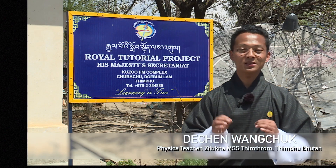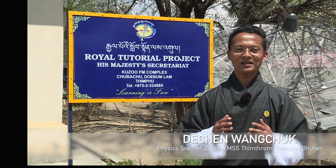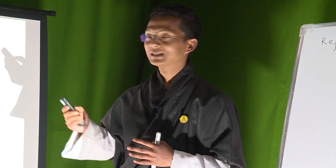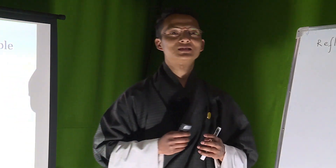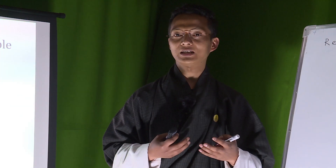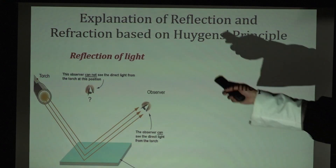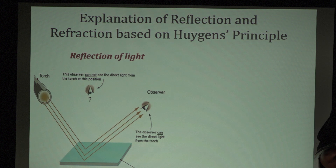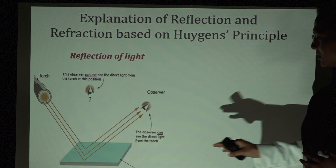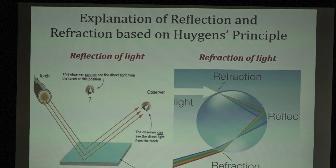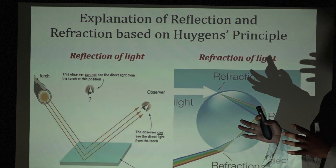So in this lesson, we'll explore something about reflection and refraction of light based on Huygens Principle. One of the common properties of waves is reflection and refraction. I will talk a little bit about the reflection and refraction based on Huygens Principle. I'm very much confident that you all have some basic ideas about reflection and refraction. To remind you once more, in simple, we can define reflection as the process of bouncing back of light after striking on a certain surface. And refraction is the process of changing the direction of light when it passes from one medium to another medium.